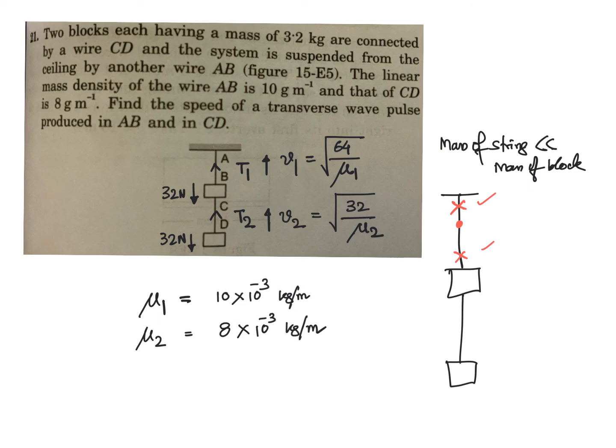So by this way, we calculate v1 and v2—v1 is the speed of the wave in wire AB and v2 is the speed of the wave in wire CD.